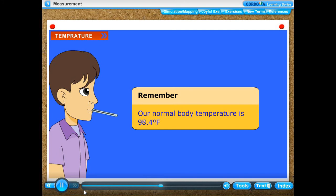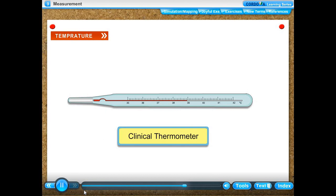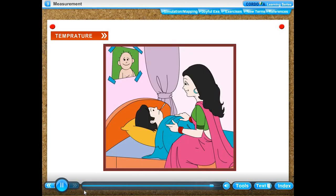Remember, our normal body temperature is 98.4 degree Fahrenheit. Doctors use a clinical thermometer to measure our body temperature. This thermometer measures the temperature in degree Fahrenheit.